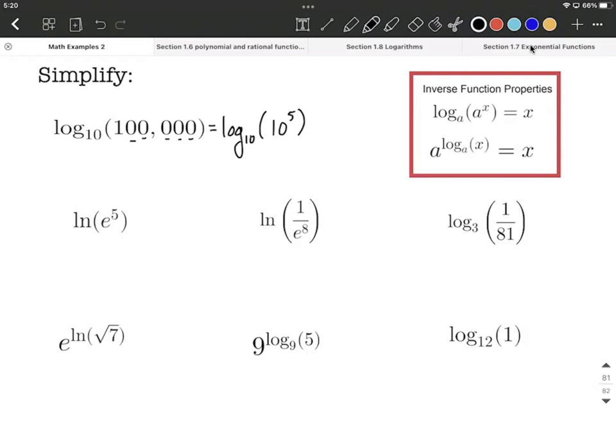Now we've set ourselves up so we have the same base with the logarithmic part as we do the exponential part. Therefore, we'll get this nice canceling out and we'll just be left with the exponent.